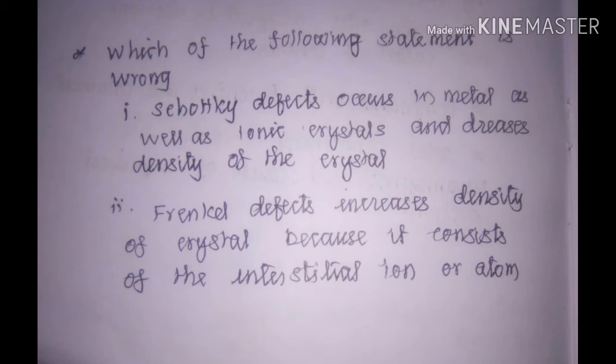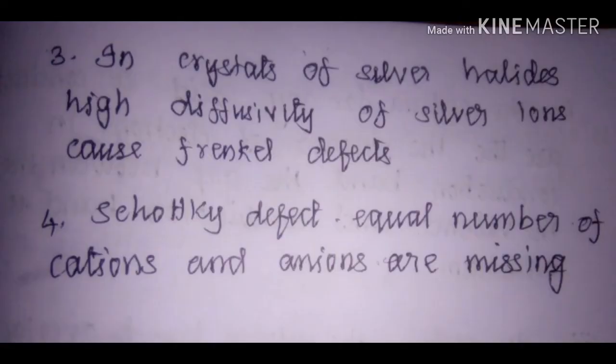The next statement: Frenkel defects increase the density of the crystal because they consist of interstitial ions. As we have seen, Frenkel defects are due to the dislocation of atoms to interstitial positions, but the atom is not removed from its crystal. So in Frenkel defects there is no change in density. However, because of Frenkel defects, there is an increase in the dielectric constant of the crystal.